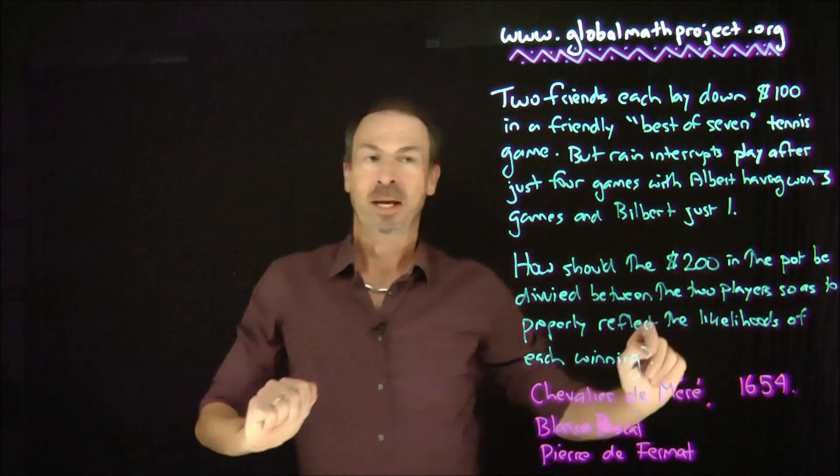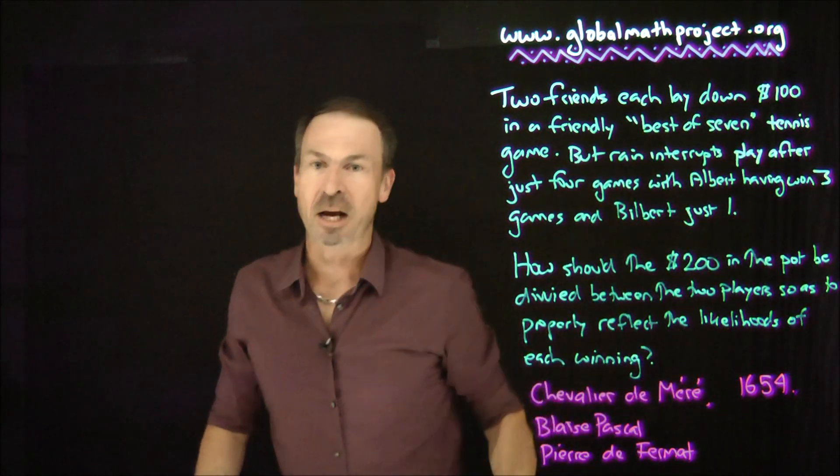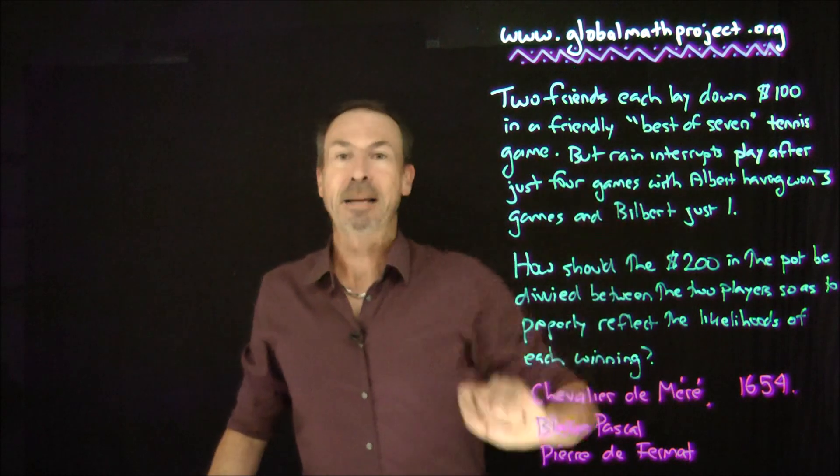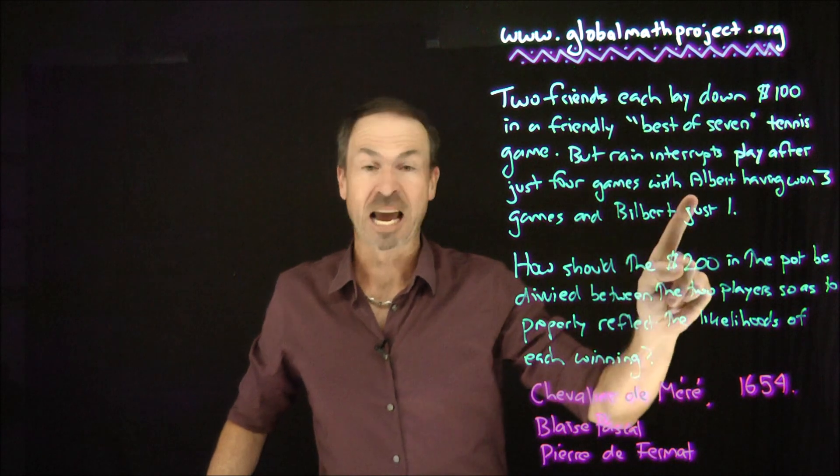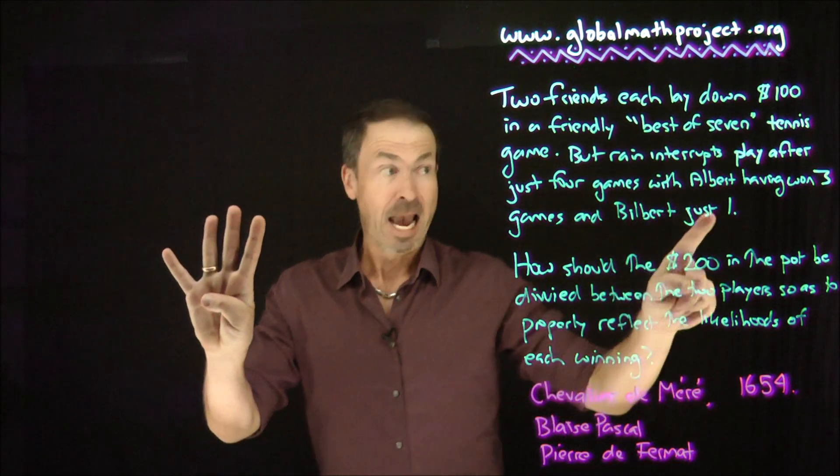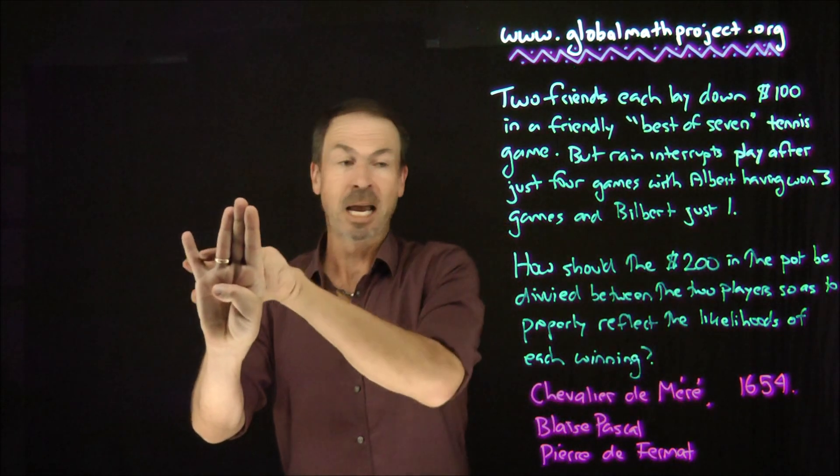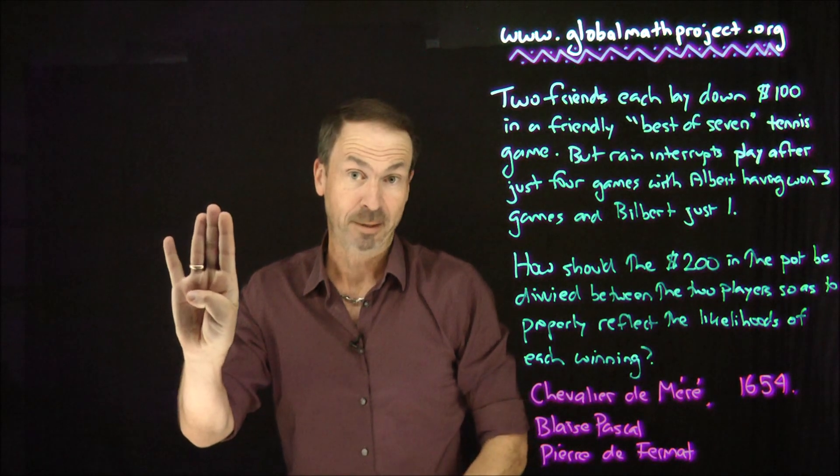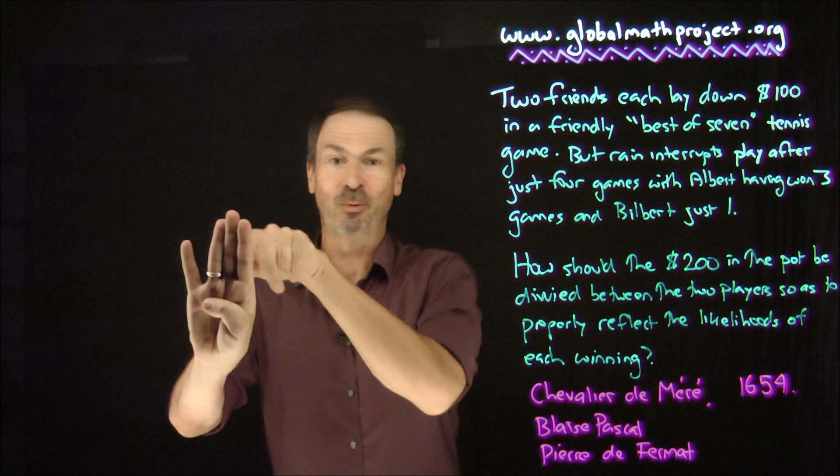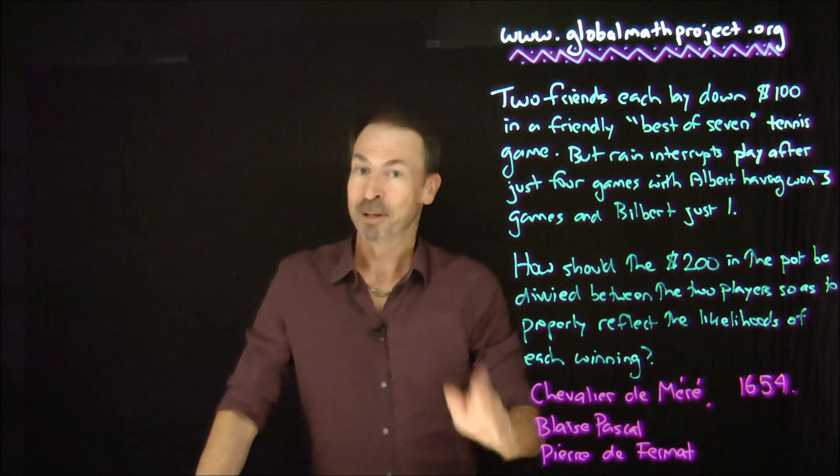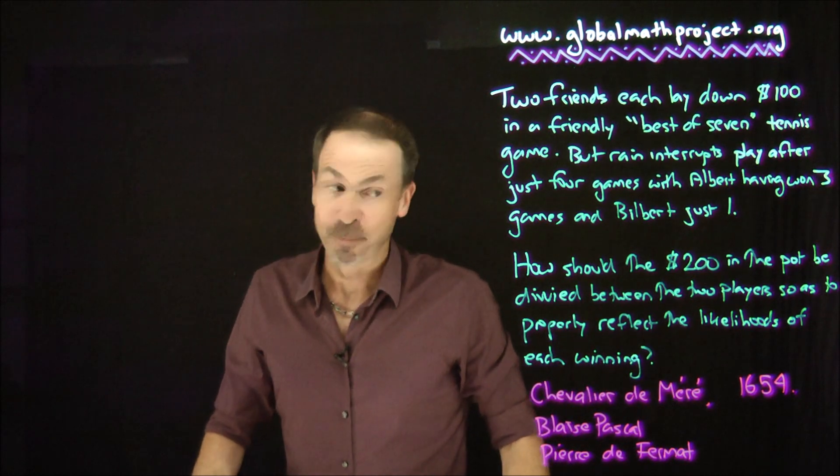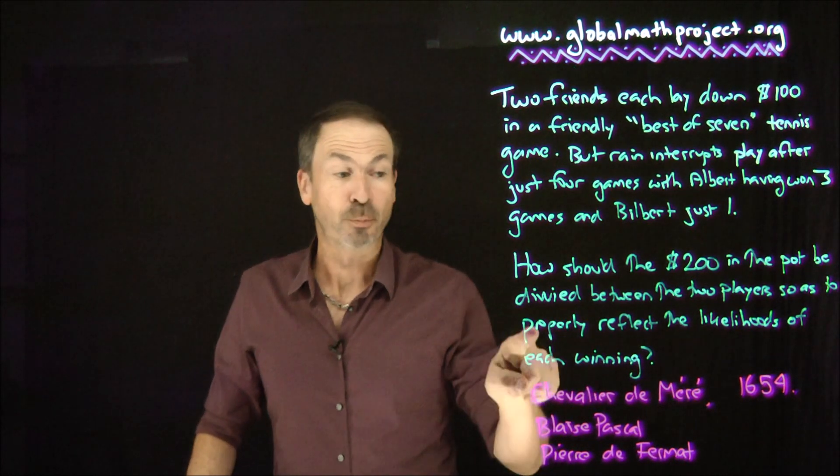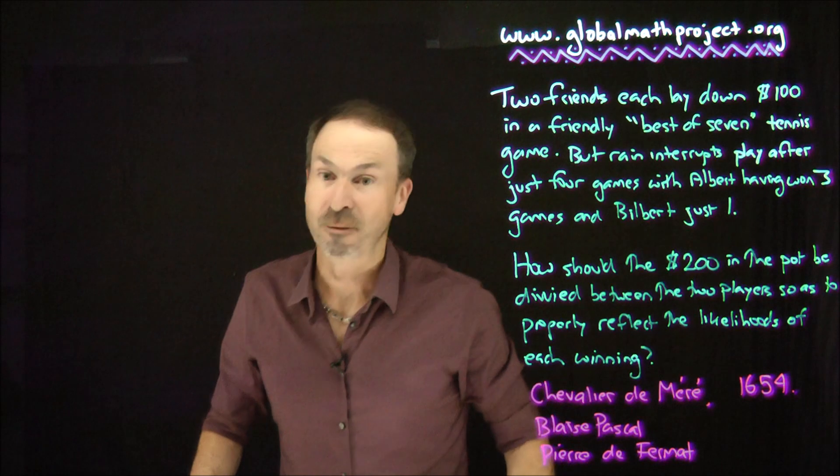Here's the situation: imagine two friends each lay down $100 in a friendly best of seven tennis game. But rain interrupts play after just four games. Albert had won three of the games and Bill had won one of the games. So they were going to go for best of seven, but they stopped after four games with three and one. The question is, how should the $200 in the pot be divided between the two players so as to properly reflect the likelihoods of each winning?